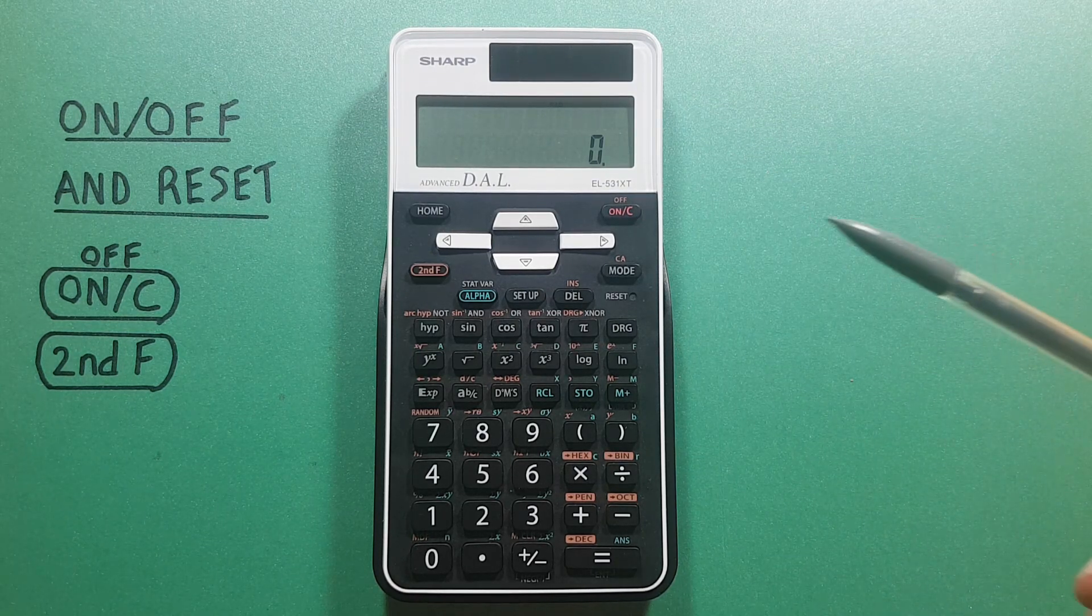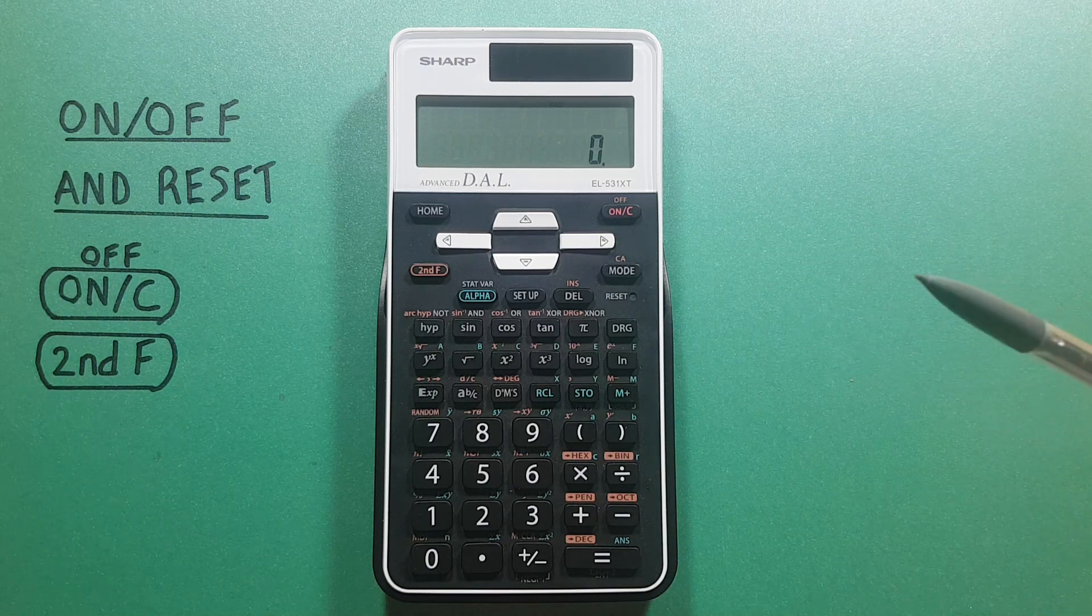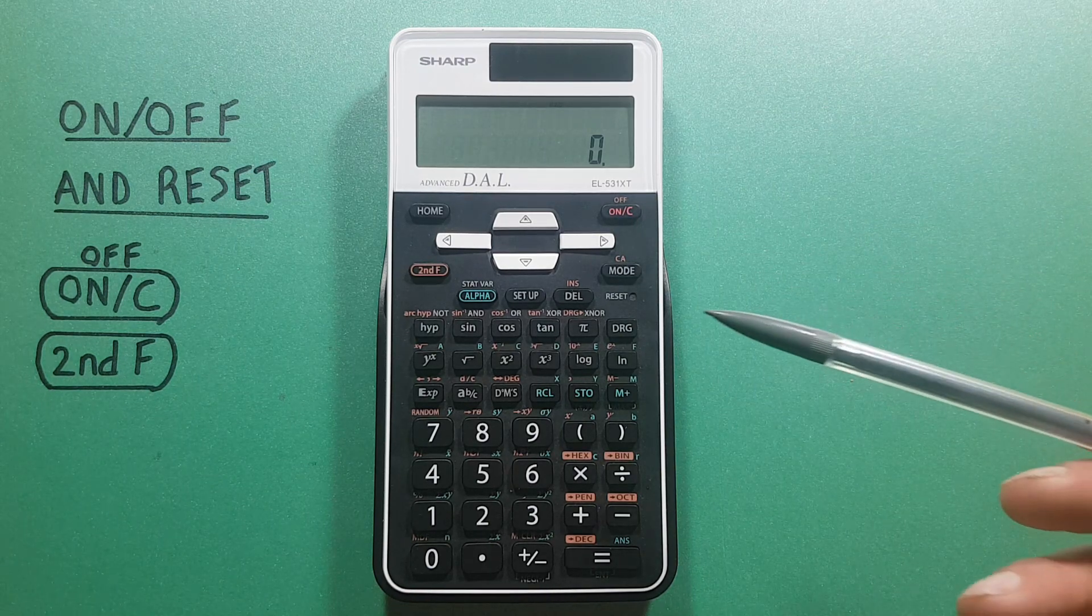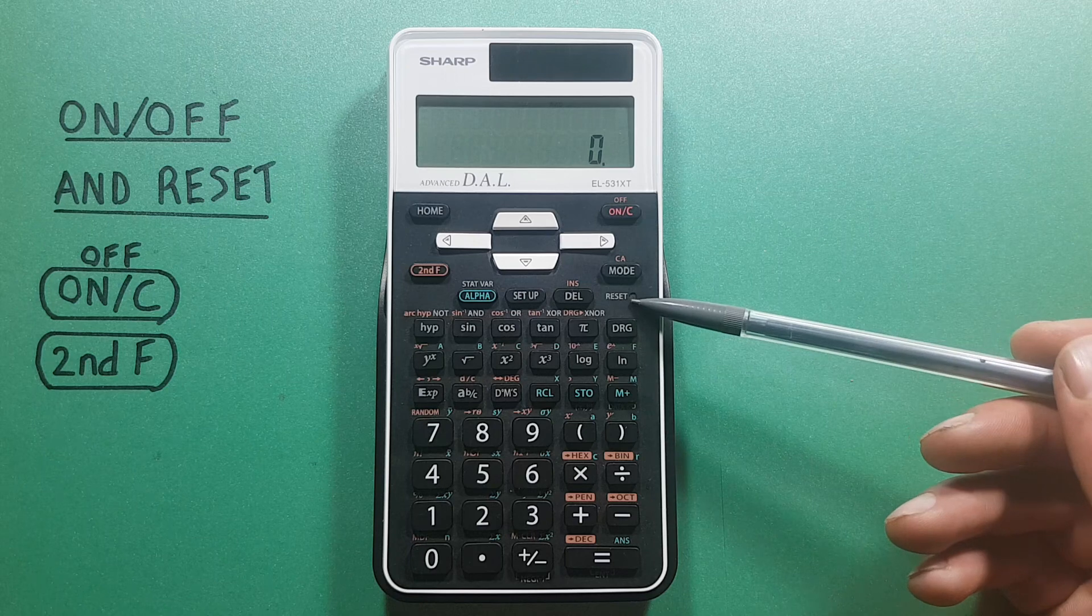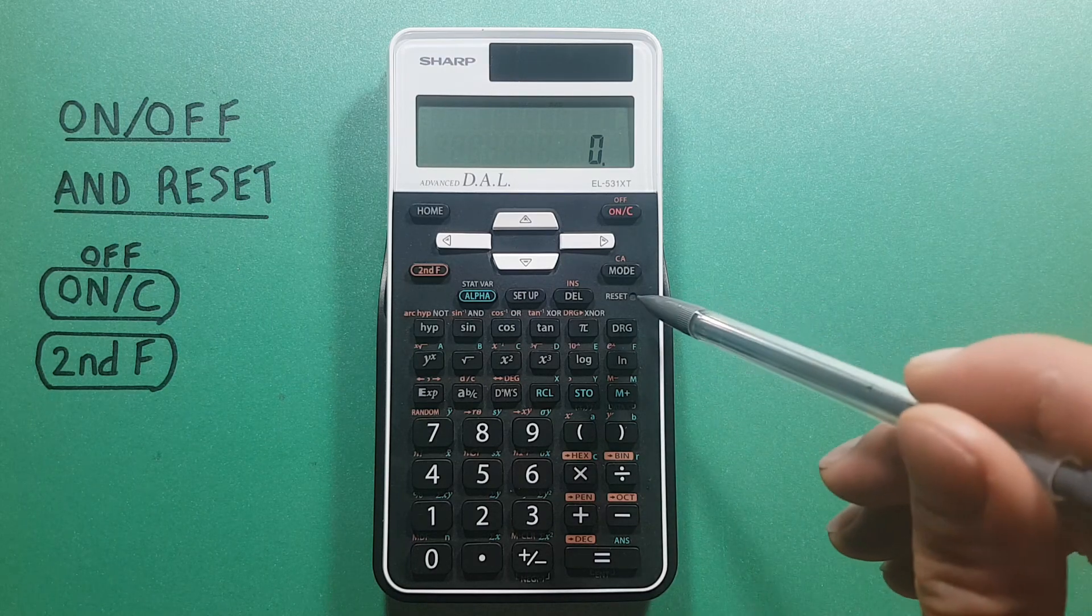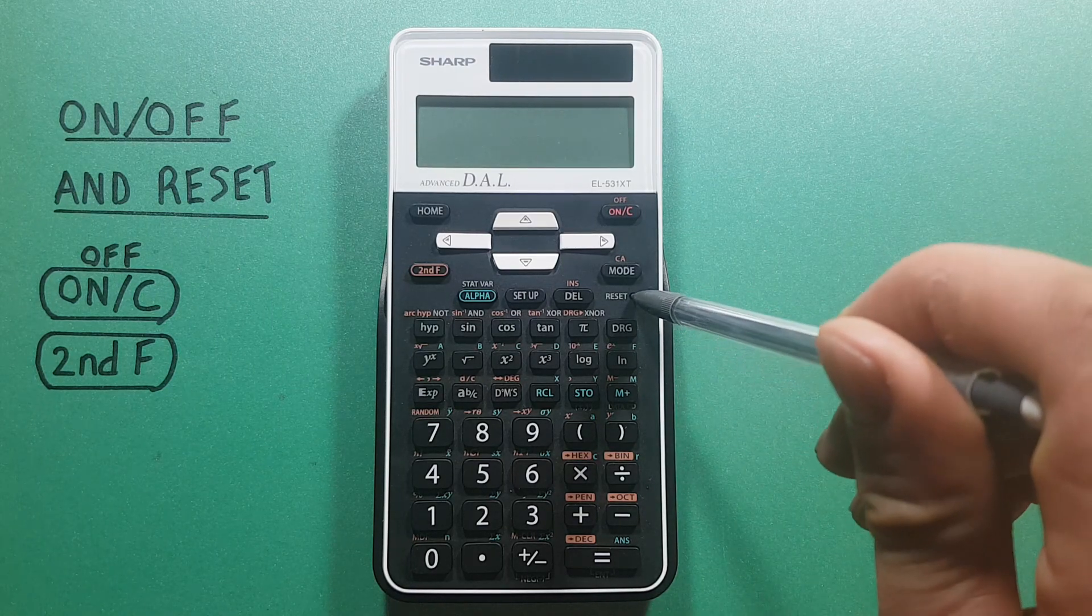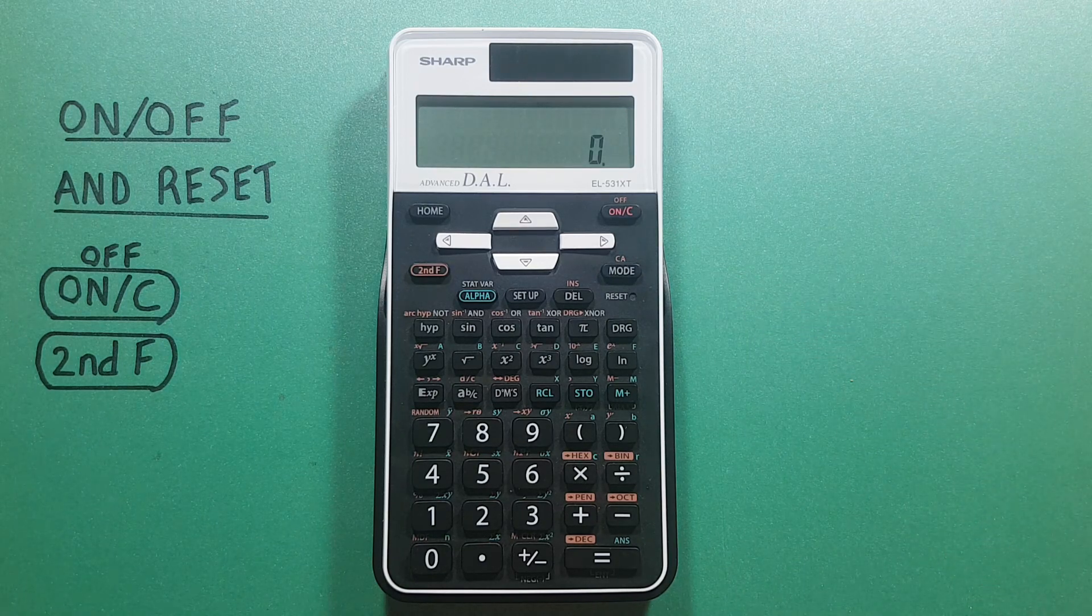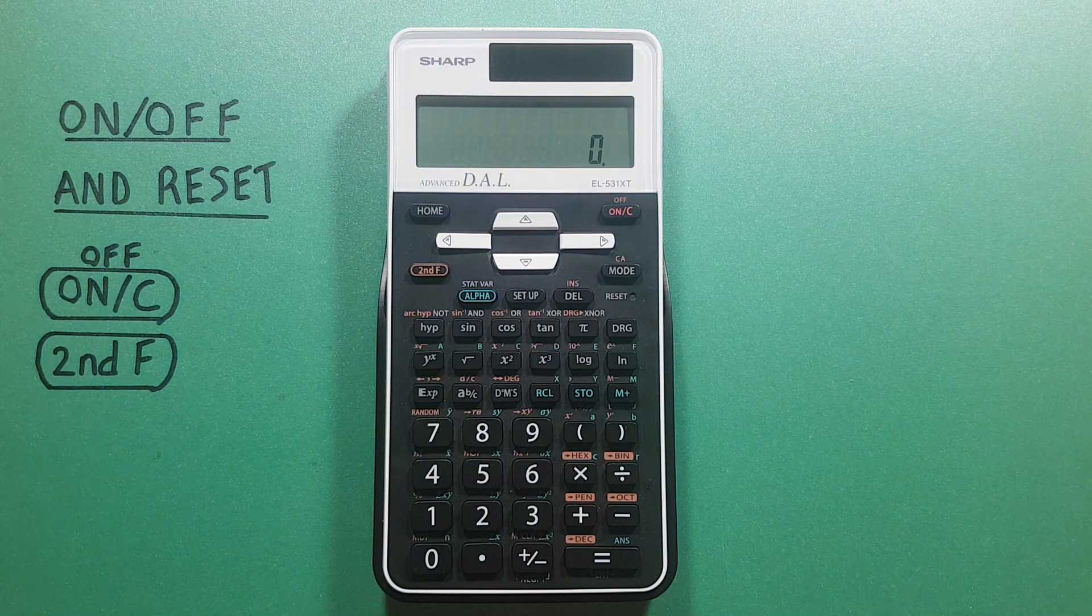To do this, you would take a long, thin object, so like a pencil or a pin, and then press in this reset button here. Press it in, hold it, and release, and your calculator has now been reset.